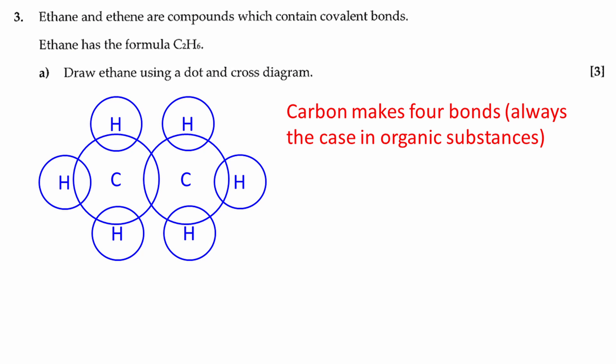Start by drawing each atom with a circle around it. Each circle represents the outer shell of an atom. Carbon is in group 4, so it has four outer shell electrons and makes four bonds.